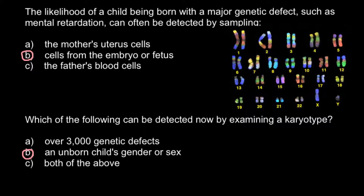We can only see changes at the chromosomal level. Of course, we cannot see genetic disorders caused by point mutations, or even if part of some genes are missing, because on each chromosome there can be thousands of different genes. We can only see changes to a chromosome that affect at least hundreds of genes, and of course we cannot see any changes when it affects only one or a few genes.